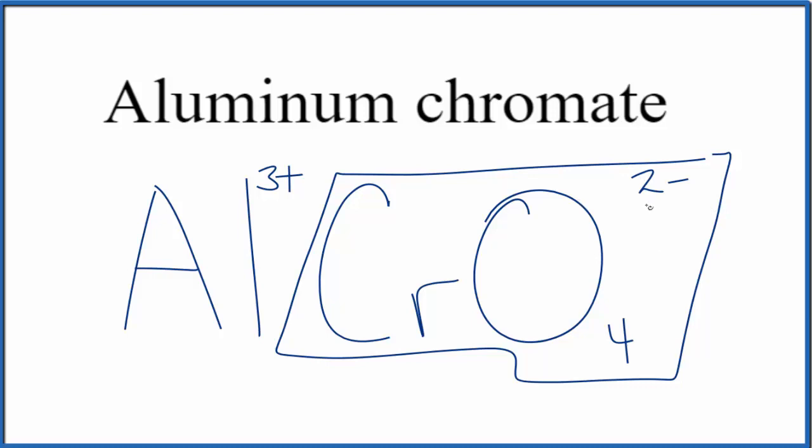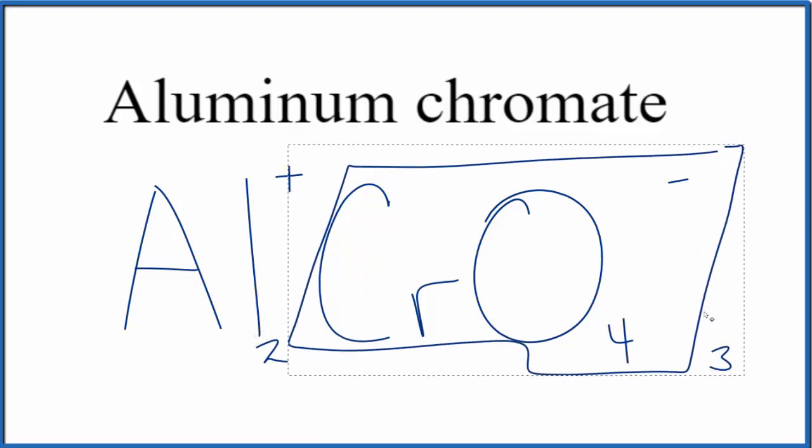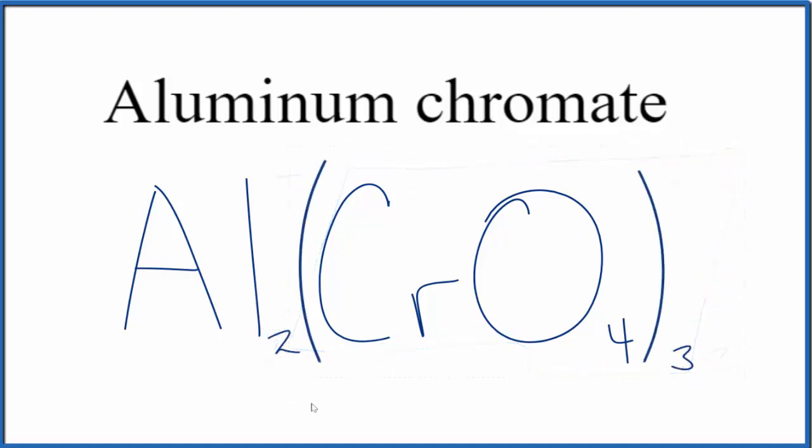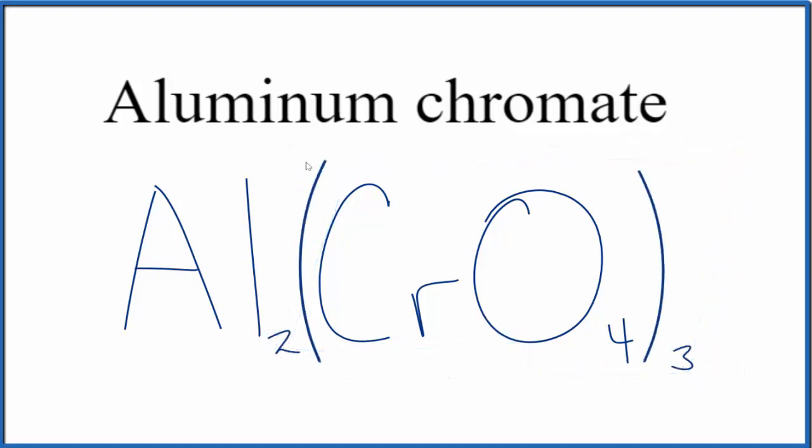A quick way to do it is to use the crisscross method. We can move the 2 over here and the 3 outside of here. We need to replace this with parentheses now since we have 3 chromate ions. And this is the formula for aluminum chromate: Al2(CrO4)3.